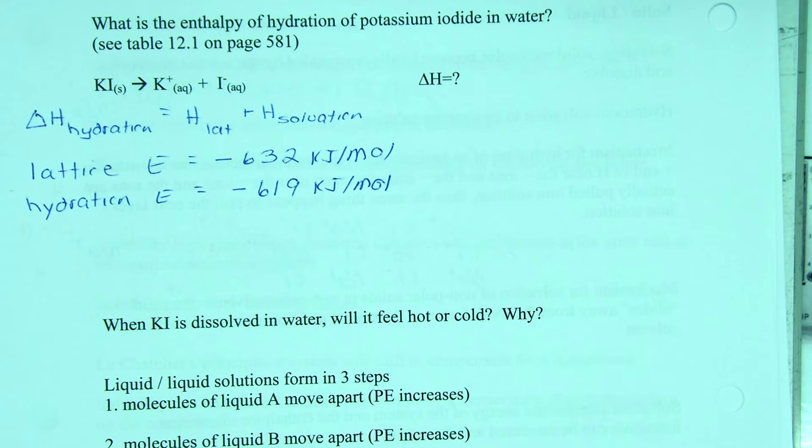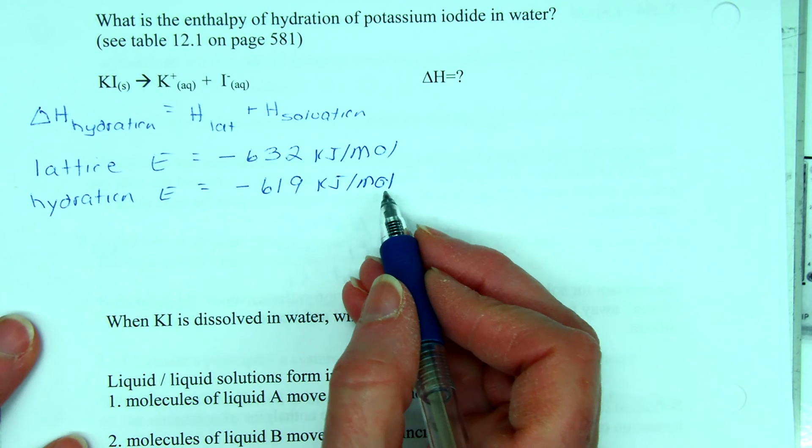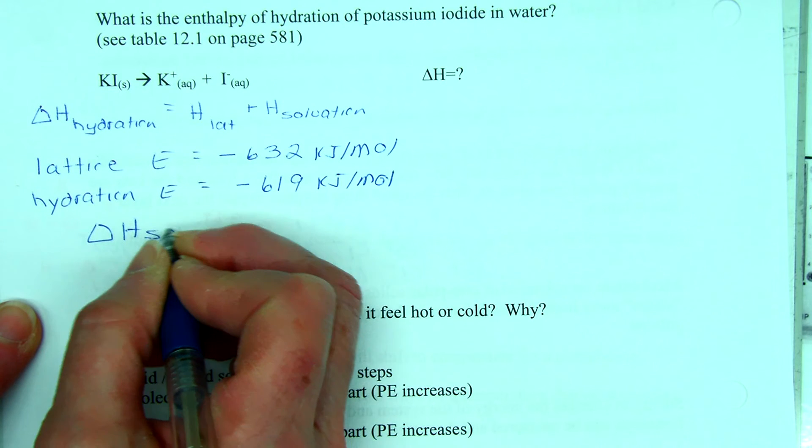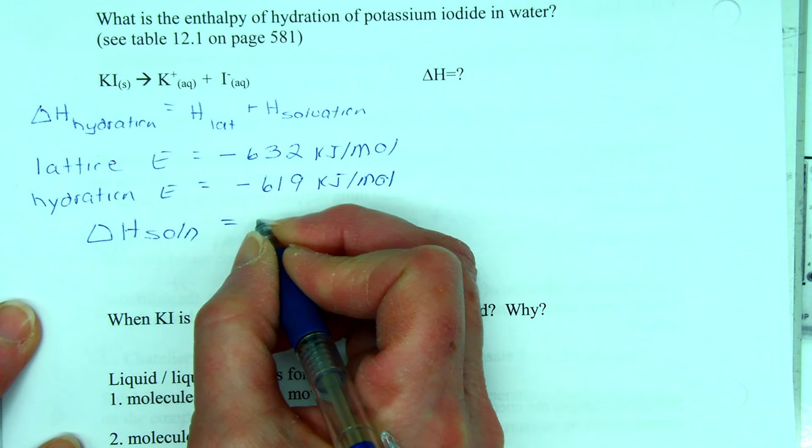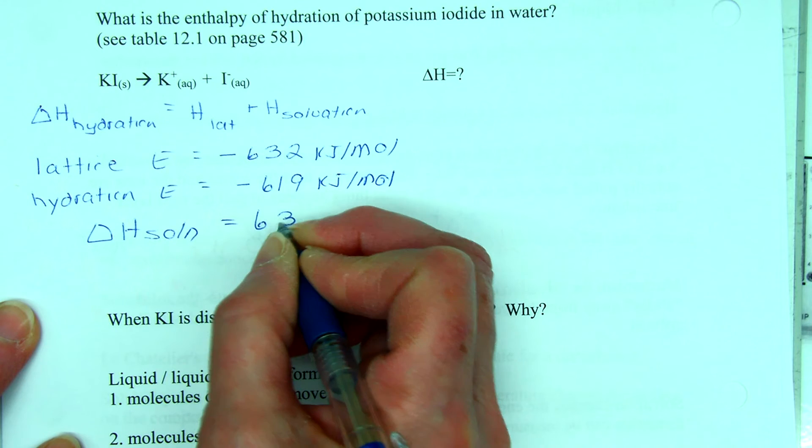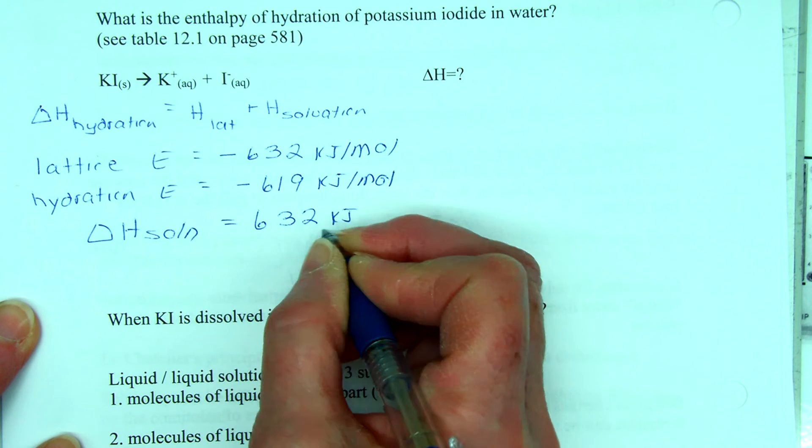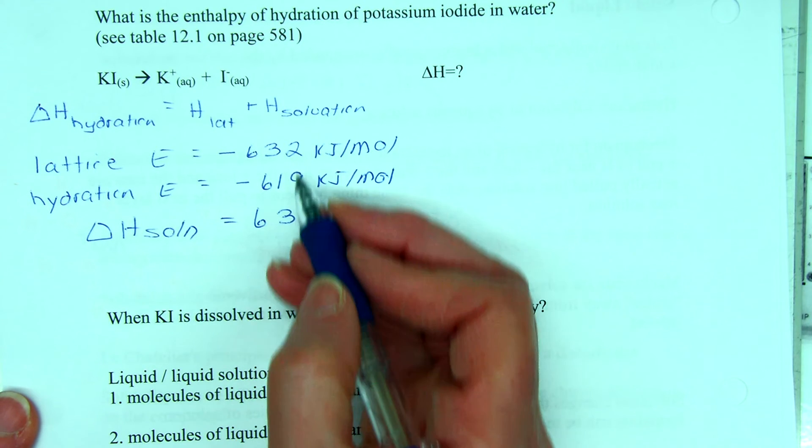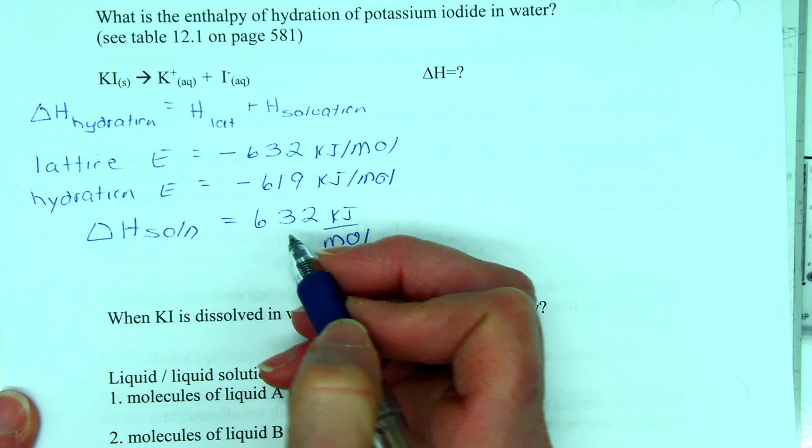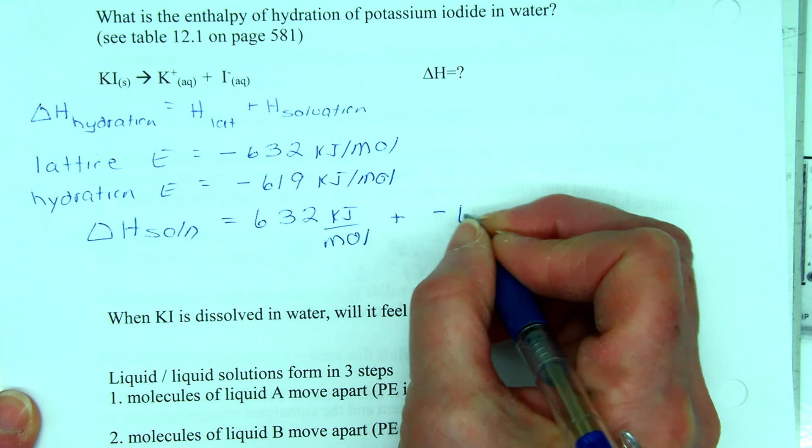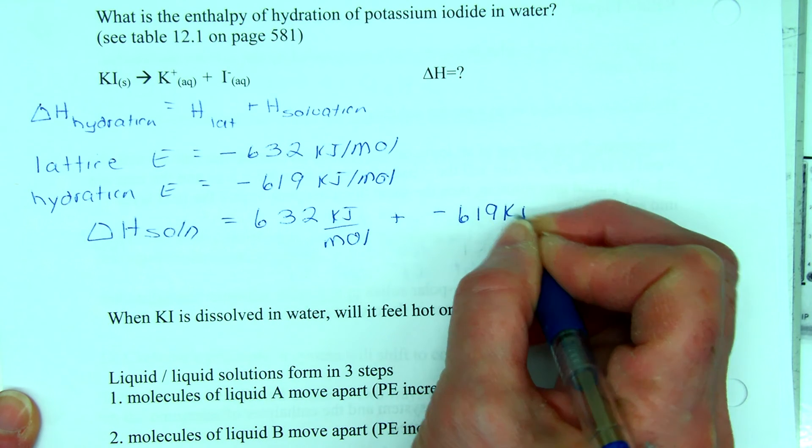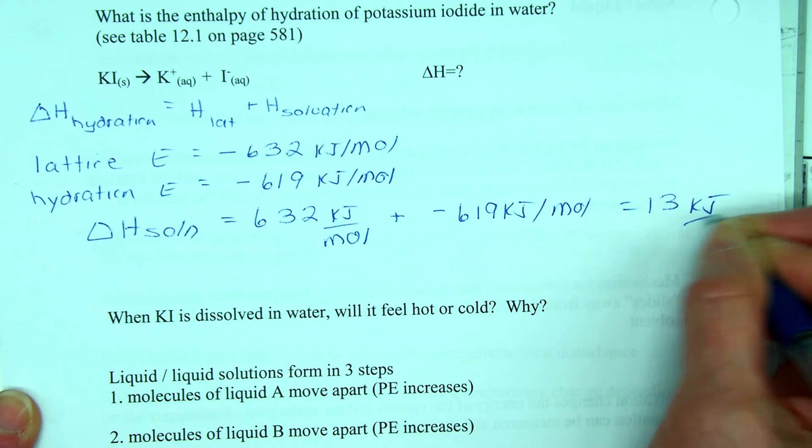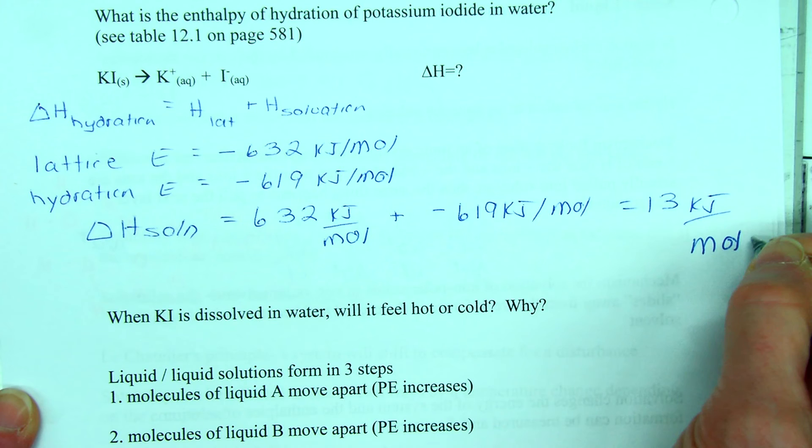Okay, so now in order to calculate the enthalpy of solution, that's equal to the lattice energy 632 kilojoules per mole - I did not make a mistake here, I changed the sign because I am breaking this lattice apart not forming it - plus a negative 619 kilojoules per mole. So that's equal to 13 kilojoules per mole.